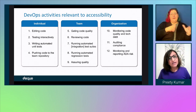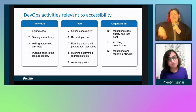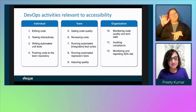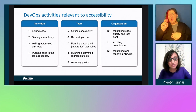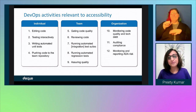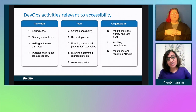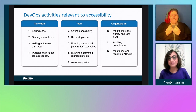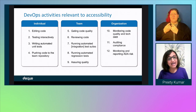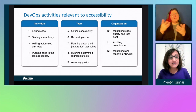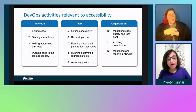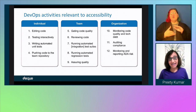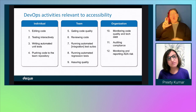The first bucket is the dev cycle — an individual working at their workstation doing activities like editing code, unit testing, writing automated unit tests, and pushing code to the team repo. This is what you do on your machine. The second bucket is what happens in a team, in shared resources on behalf of a development team, to release software. That includes things like gating code quality, making sure code submitted by a developer is reviewed before it's merged, running end-to-end integration tests and automated regression tests, basically assuring quality before a release goes out.